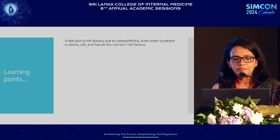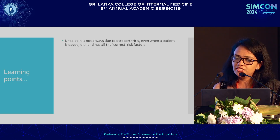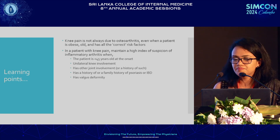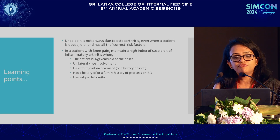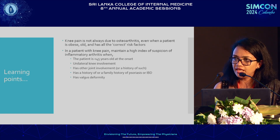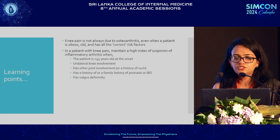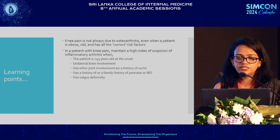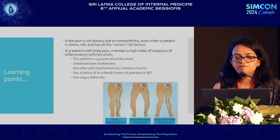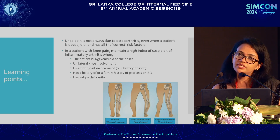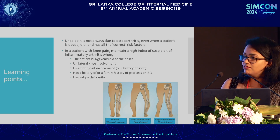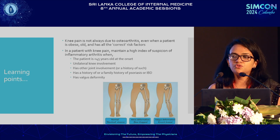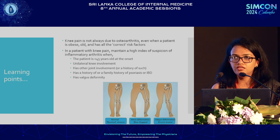The learning points from these four cases: knee pain is not always due to osteoarthritis. Even when a patient is obese, old, and has all the correct risk factors like heavy work and stair climbing, still think it could be something else. In a patient with knee pain, always maintain a high index of suspicion for inflammatory arthritis if the patient is less than 45 years old at onset, has unilateral knee involvement, other joint involvement, a history of psoriasis or inflammatory bowel disease, or a family history of these, or has a valgus deformity. Valgus almost never happens with primary osteoarthritis — primary OA presents with varus or bow-leg deformity. If the knee is deforming the other way, think inflammatory.